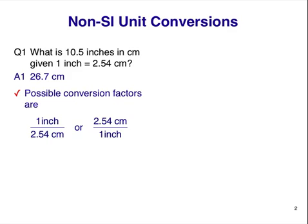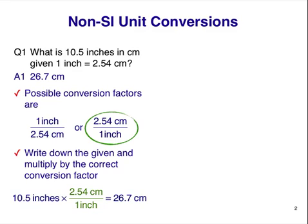The next thing we'll do is write down the two possible conversion factor ratios we might need given the information in the question. Remember, we'll only use one of these in the calculation. Next, we'll write down the information given, 10.5 inches, and multiply by one of the conversion factors we wrote.